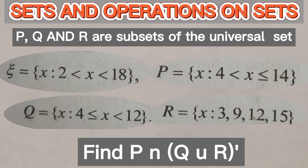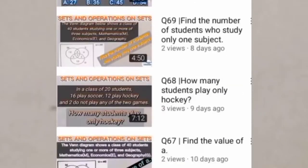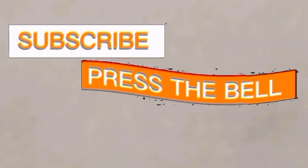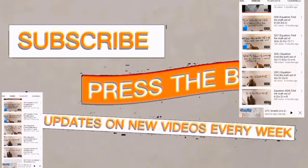The first thing that we have to do with this question is to list all the elements in the universal set, the set P, the set Q and then the set R before we can go ahead and tackle the question itself. Now if this is your first time reaching your channel, click on the subscription button and also press on the notification bell to be notified any time we upload new videos.